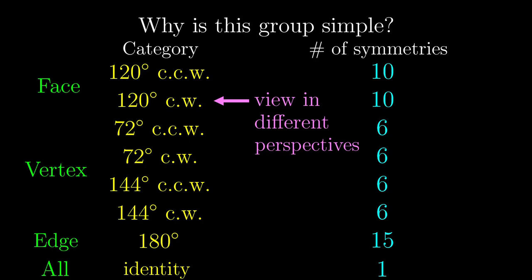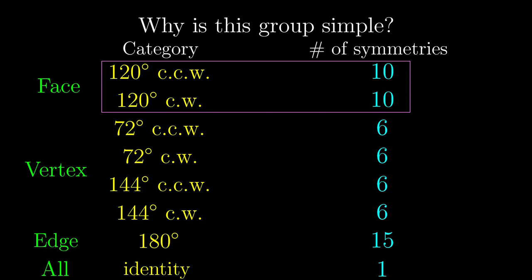By the exact same argument, if we have picked the seed from the second category instead, again just by viewing things upside down, we would also have to pick something from the first category. And so, everything in these two categories would have to be chosen as well.